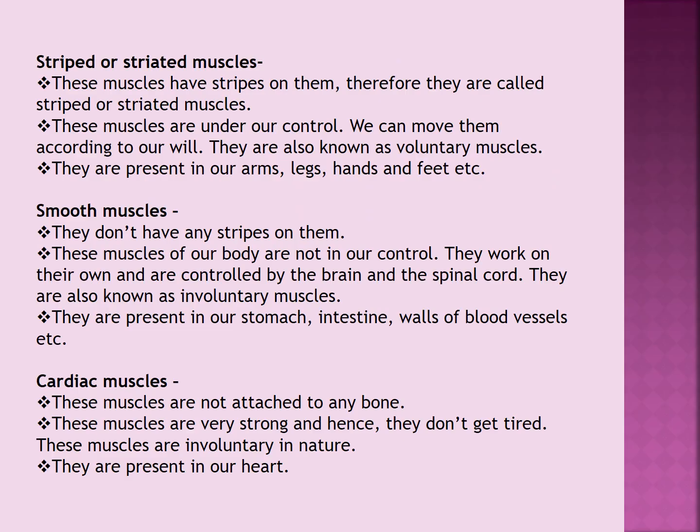Striped or striated muscles are also known as skeletal muscles. These muscles have stripes on them, just like a zebra, therefore they are called striped or striated muscles. These muscles are under our control — we can move them according to our will, such as moving our arms and legs. That is why these muscles are also called voluntary muscles.